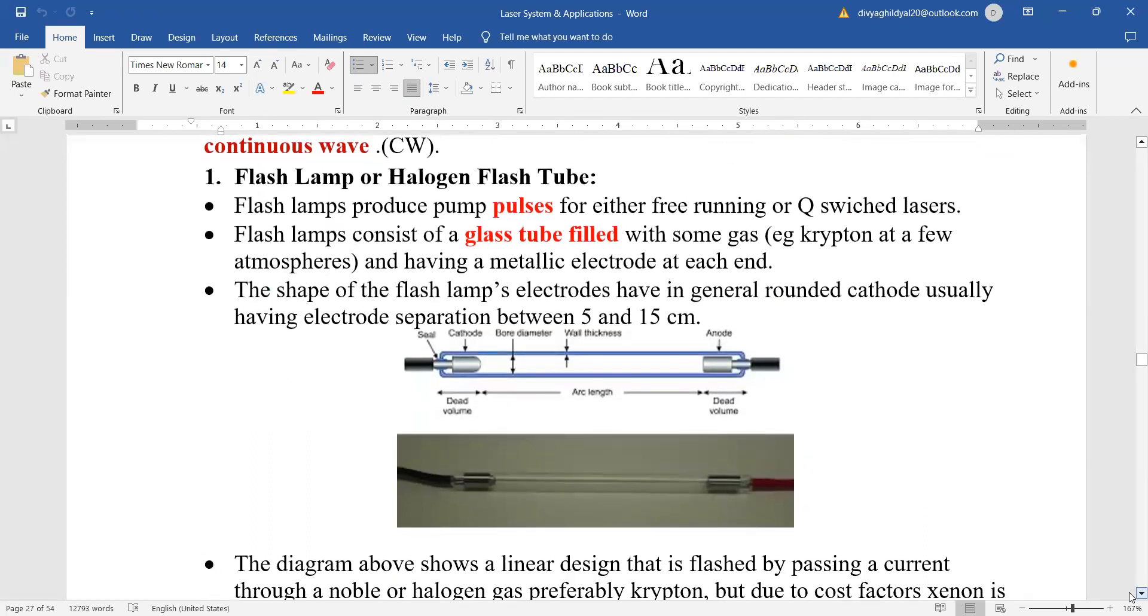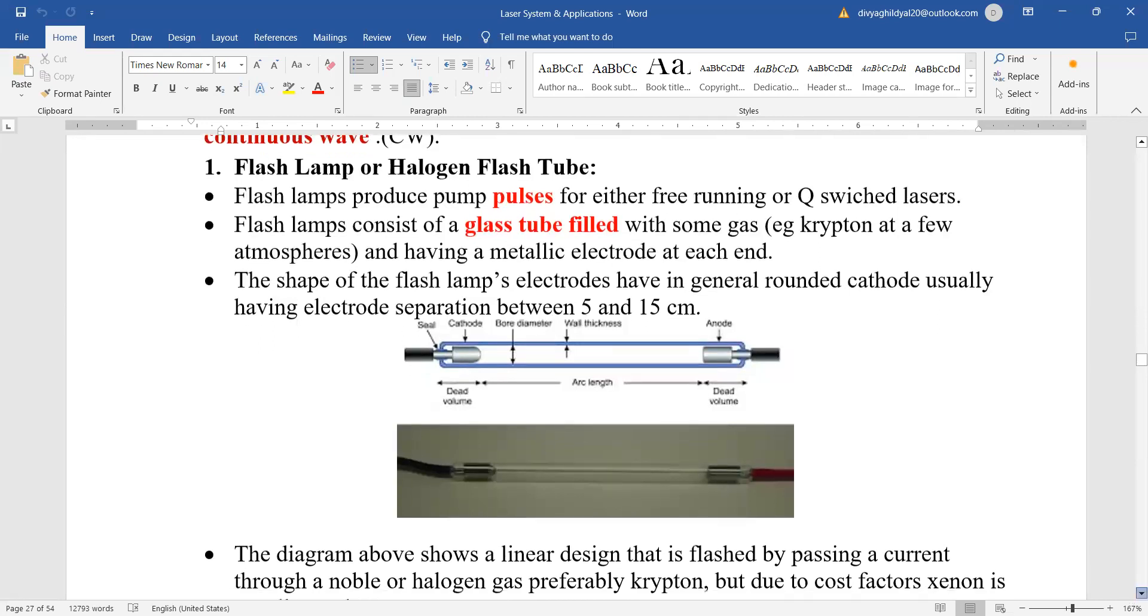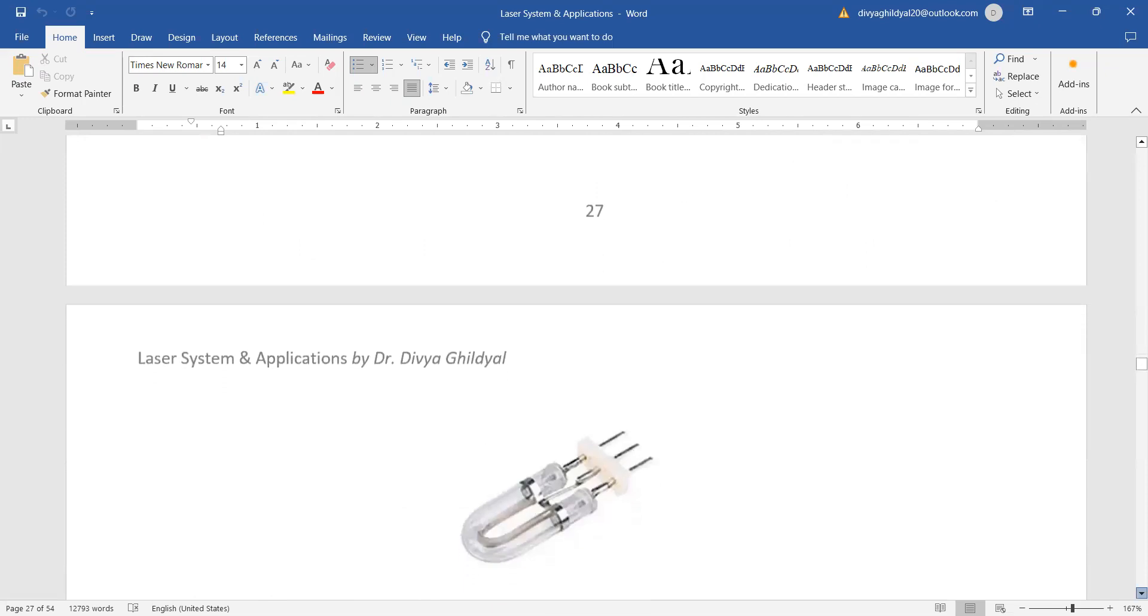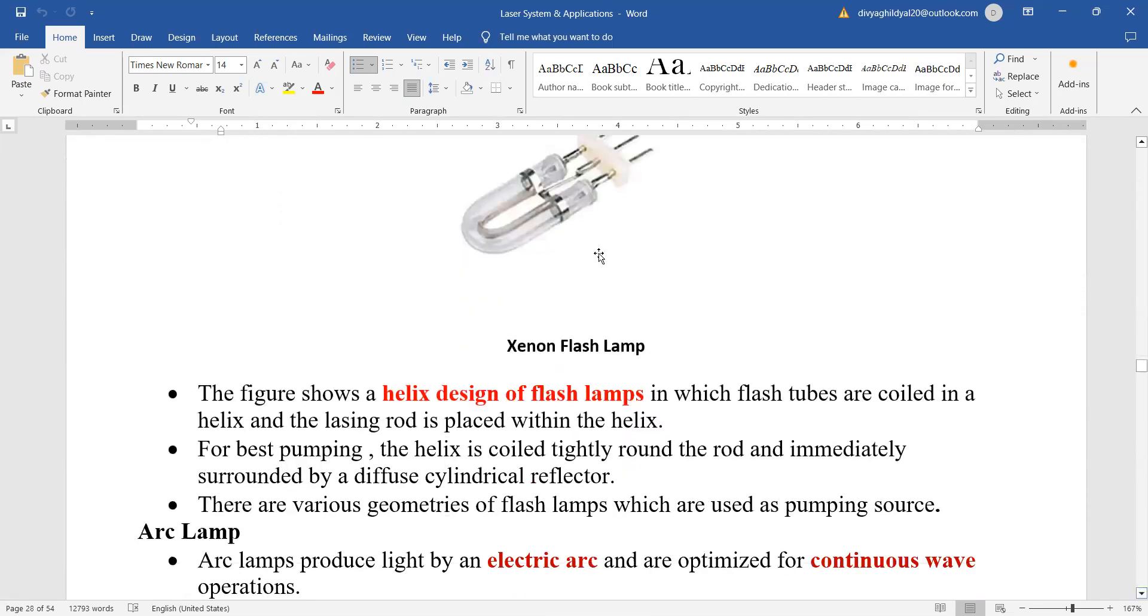Flash lamp or halogen flash tube. Flash lamps produce pump pulses for either free or Q-switched lasers. Flash lamp is consisting of, as you can see here in the diagram, a glass filled tube with some gas like krypton and having metallic electrodes, the cathode and anode. The shape of the flash lamp electrodes are in general rounded cathode, usually having electrode separation between 5 and 15 centimeters. This is a linear design. The arc length and diameter are usually taken in this. This is a xenon flash lamp which is used. It is a helix design of flash lamp in which flash tubes are coiled in the helix and the lasing rod is placed within the helix. They are commonly used in ruby laser also.